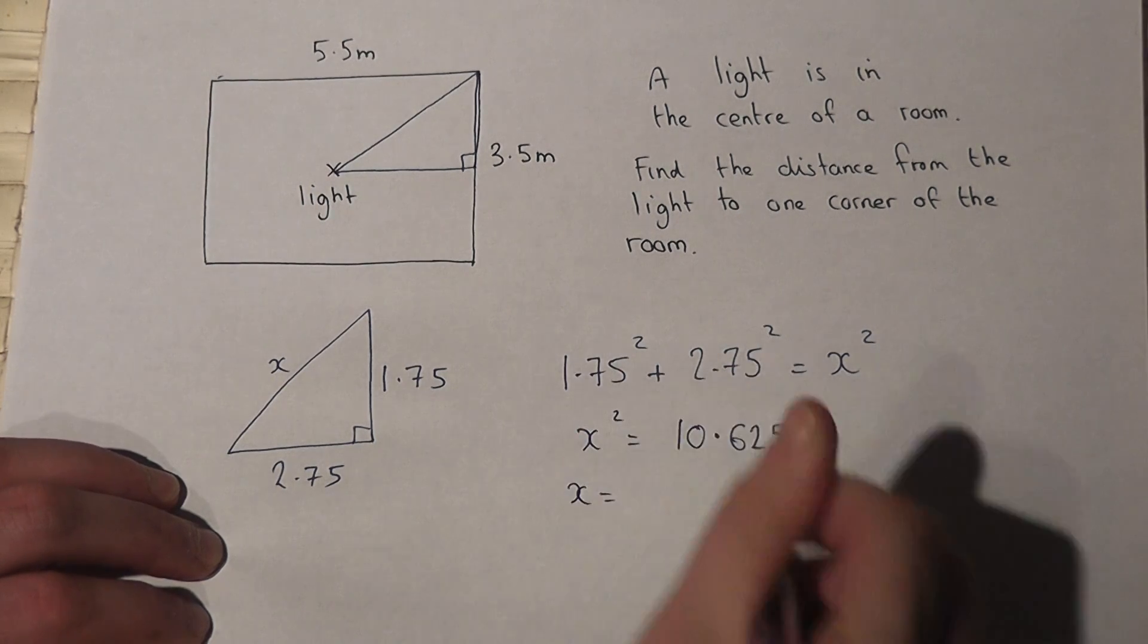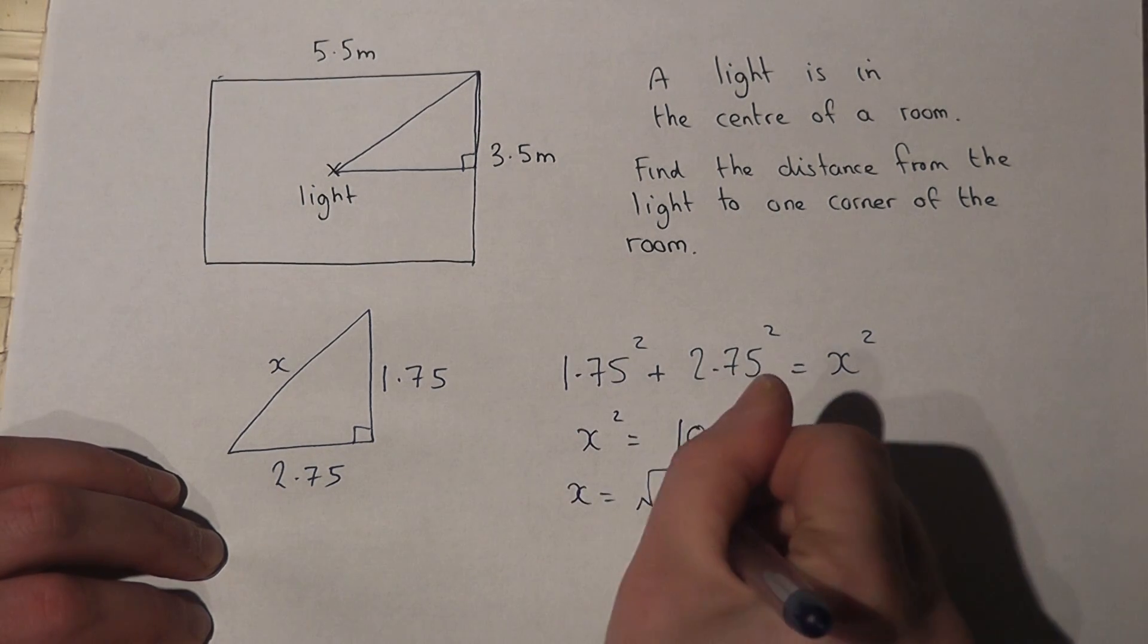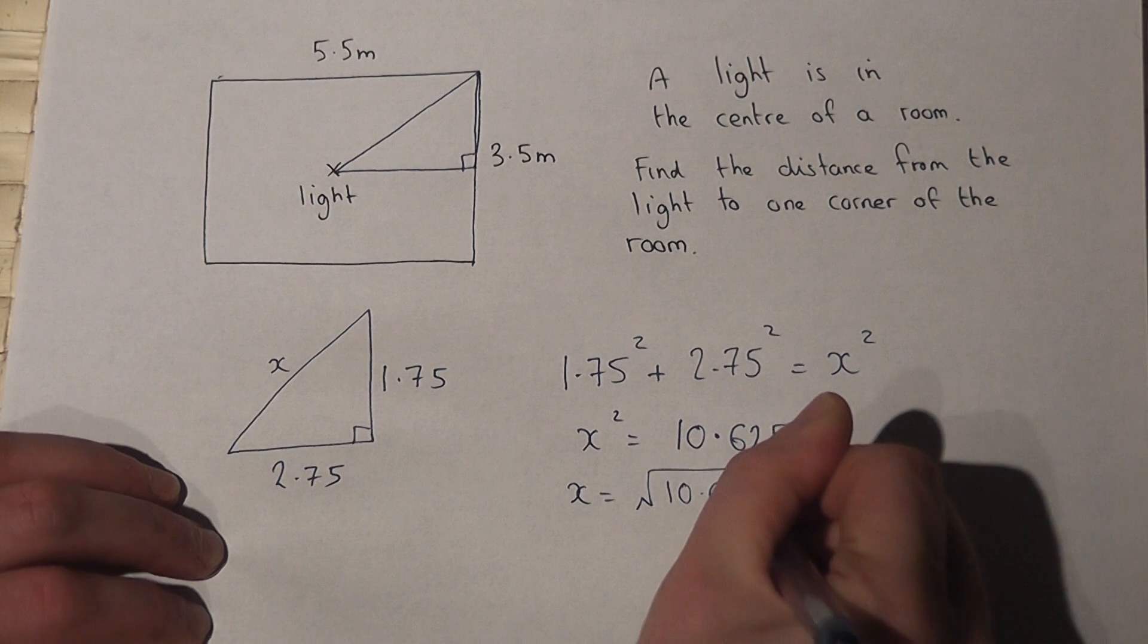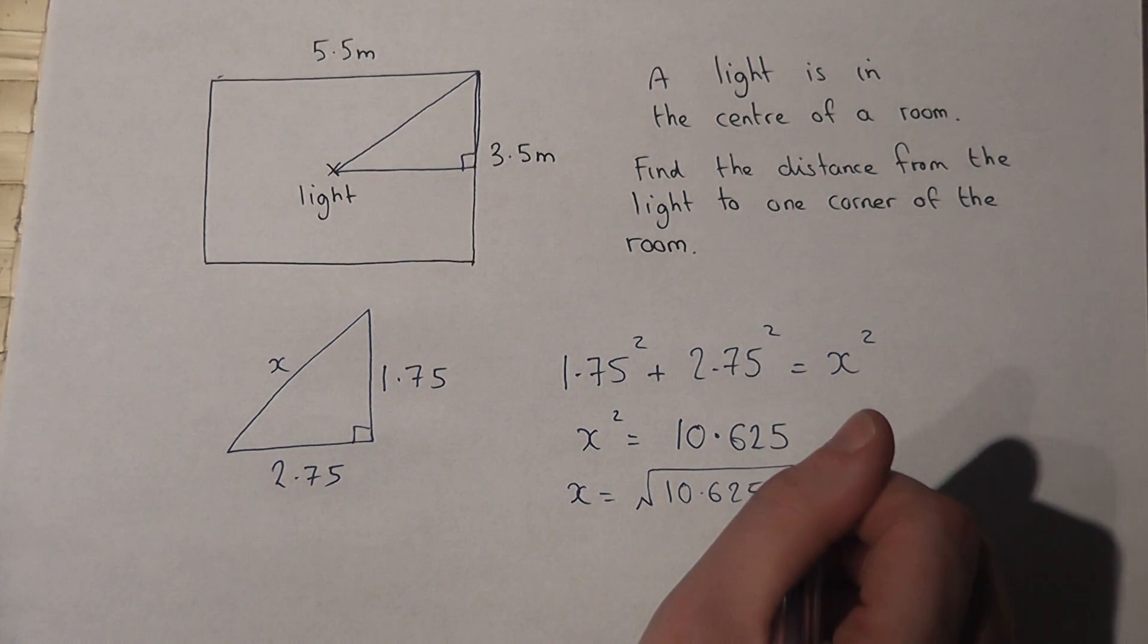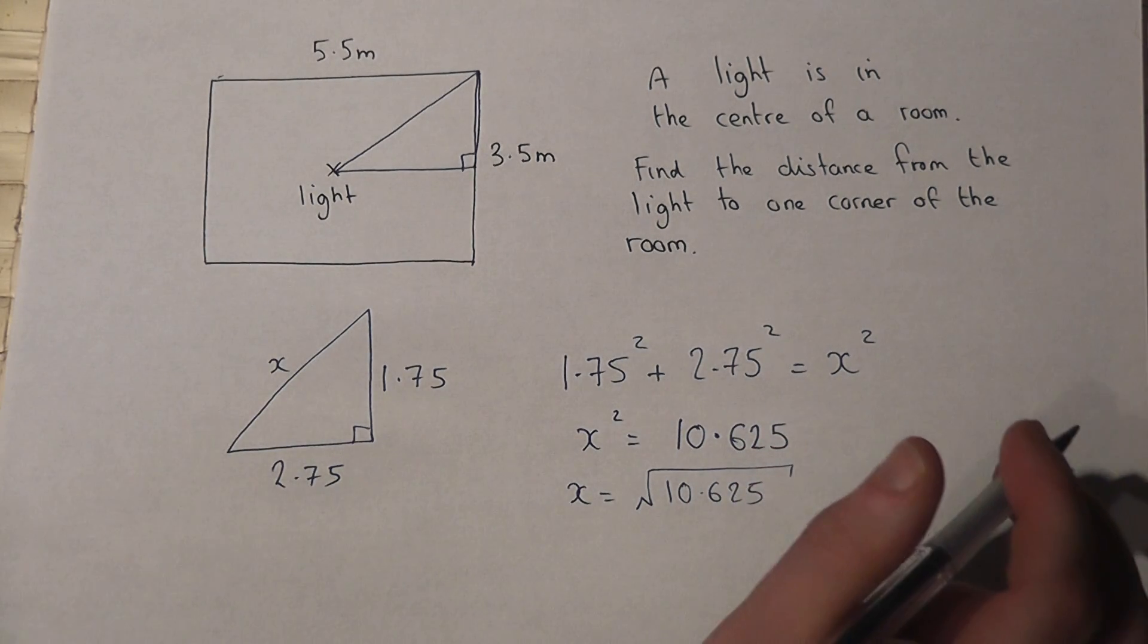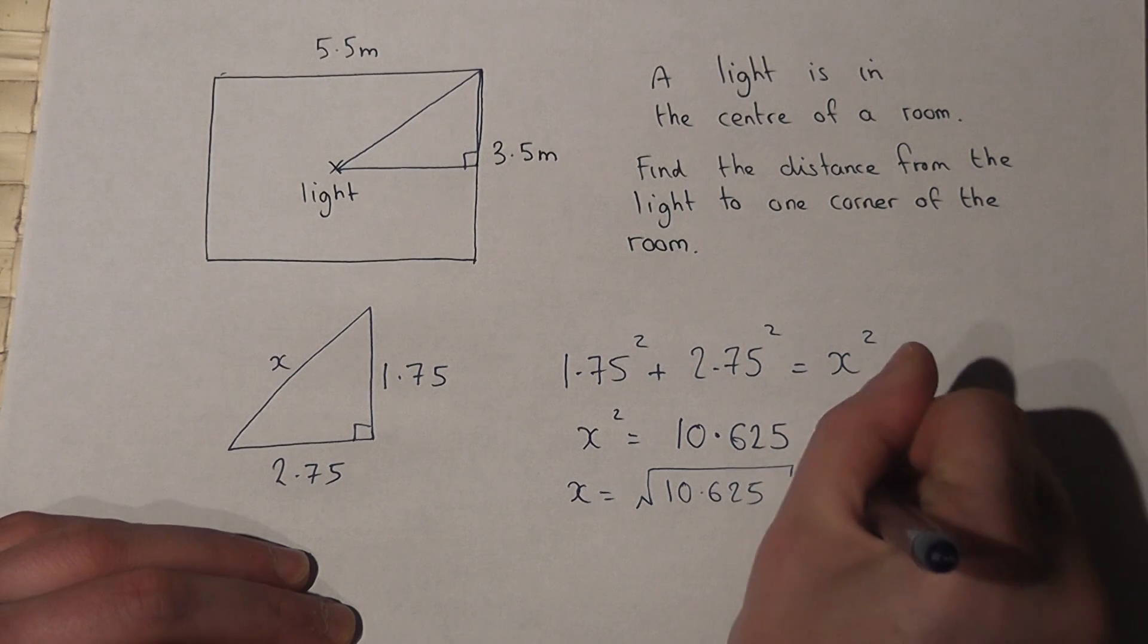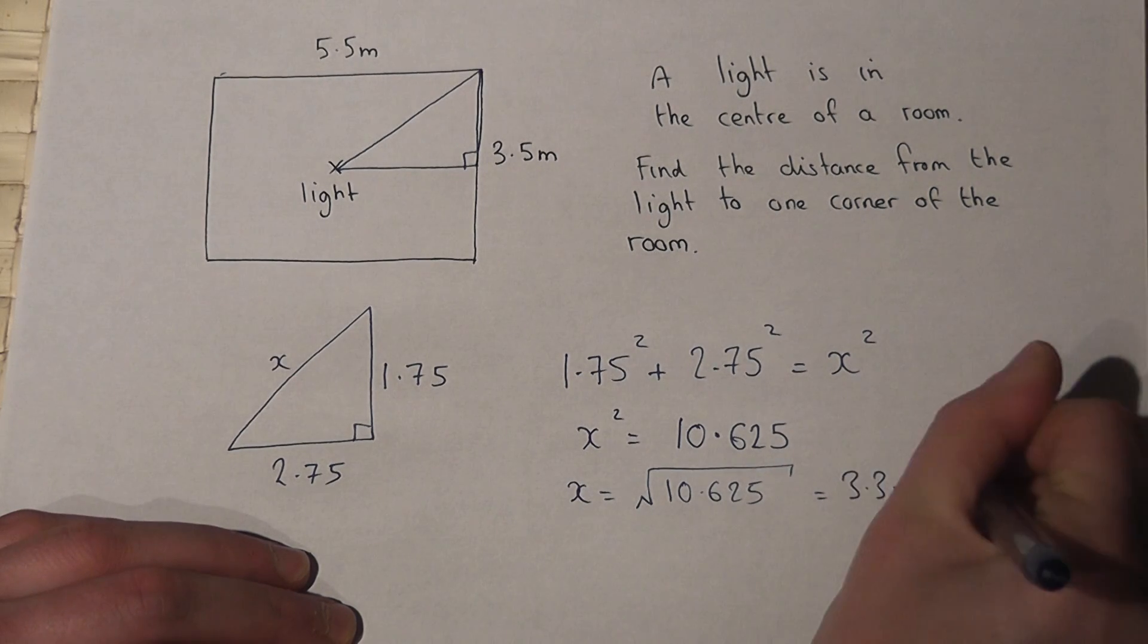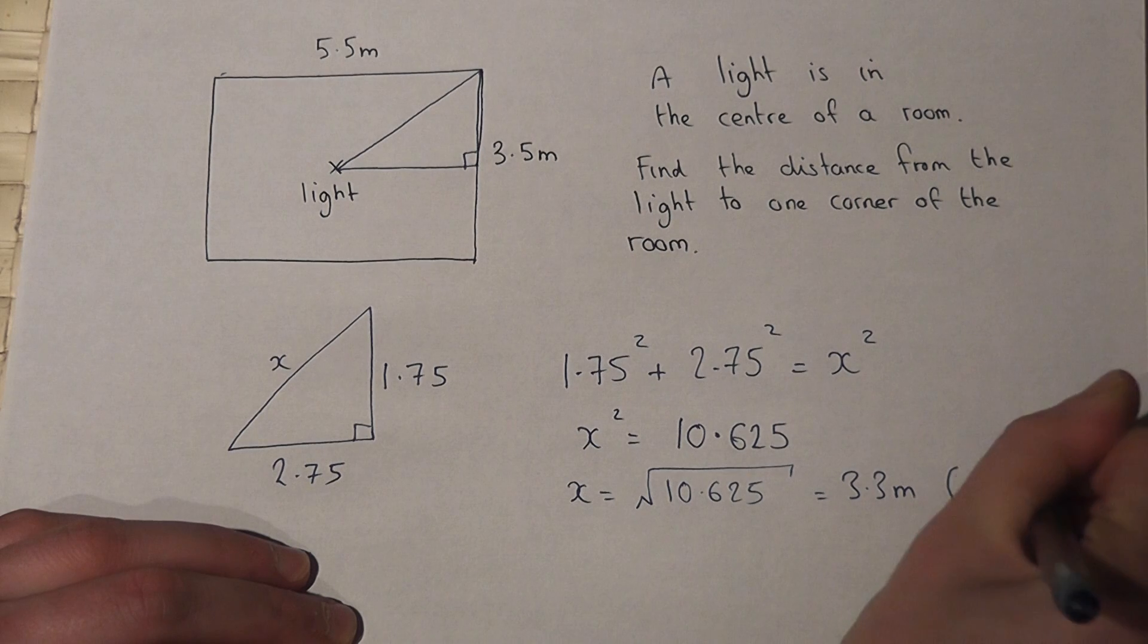So to find x I do the square root of 10.625, which works out at 3.3 meters to one decimal place.